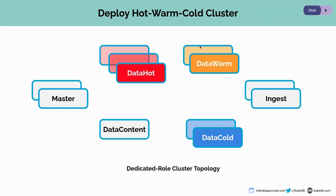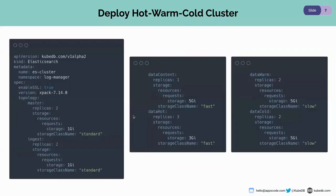For this demo, we are going to deploy a cluster. Here is the cluster topology: two dedicated master nodes, three data hot nodes, two data warm and two data cold, and two ingest nodes. It is recommended to use a data content node along with the data hot node. The data hot node will store time series data; if the data is not time series, it will go to the data content node by default. Let's take a look at the Elasticsearch YAML.